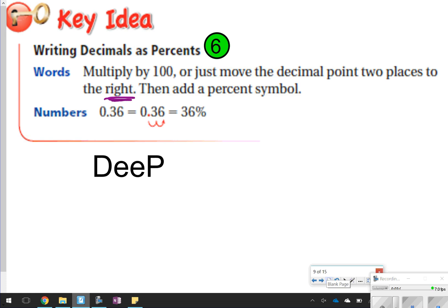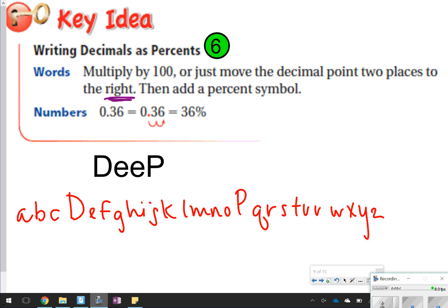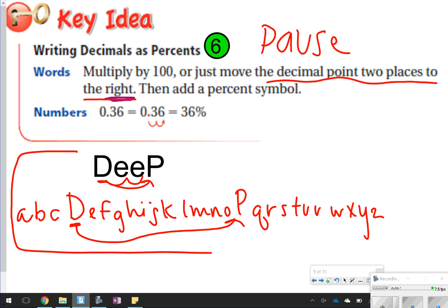For the second part of our notes, we're going to look at writing decimals as percents. Again, you can use the word DeeP or the alphabet. So again, if you're going from decimals to percents, you're moving twice to the right. Same thing with the alphabet. You have to go to the right to get from decimal to percents. Go ahead and pause the video right now so you can write down how to move the decimal. Move the decimal two places to the right. I would also maybe write these two ways down because these are going to help you remember. Go ahead and click pause and then click play when you're ready to move on.